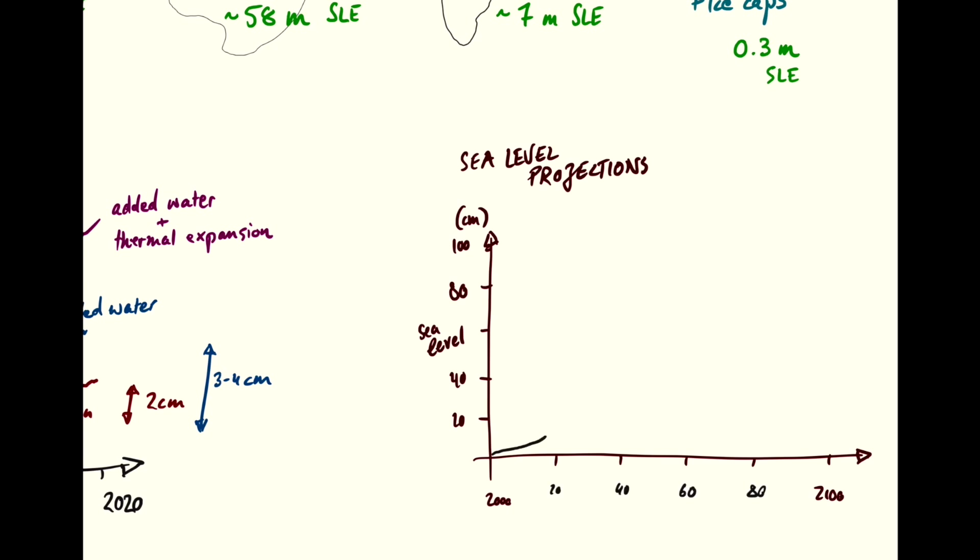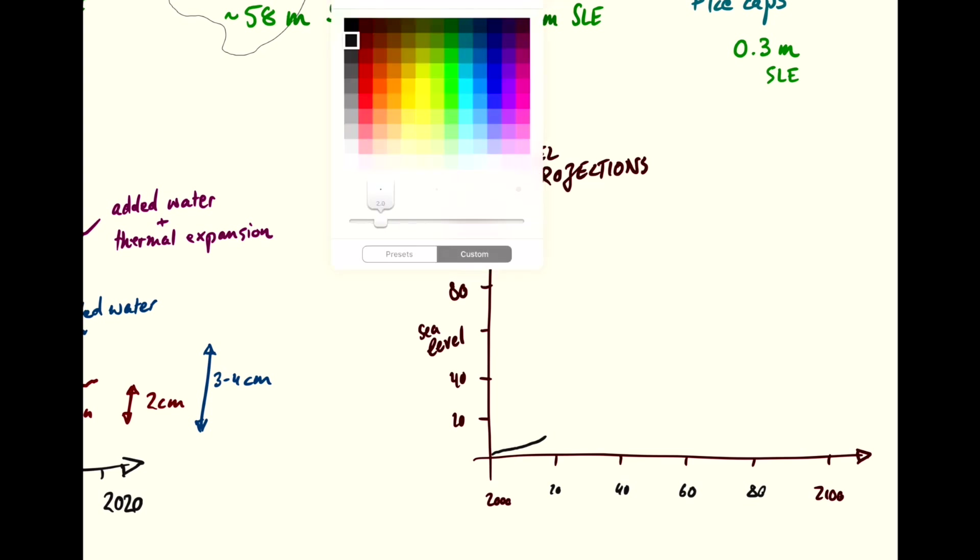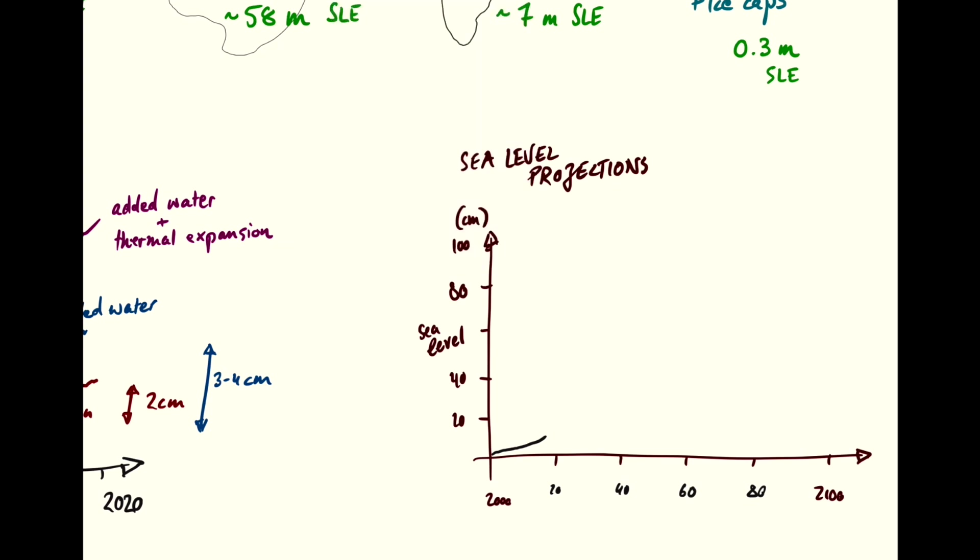And we've had the observed changes, which has been something like 6 or 7 centimeters since 2000. Then climate model projections predict that we will have sea level rise that looks somewhere between these two extremes, with most predictions falling closer to the lower end here, something between 40 and 60 centimeters of sea level rise over the next 80 years.